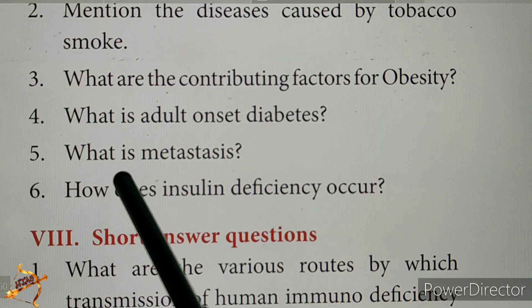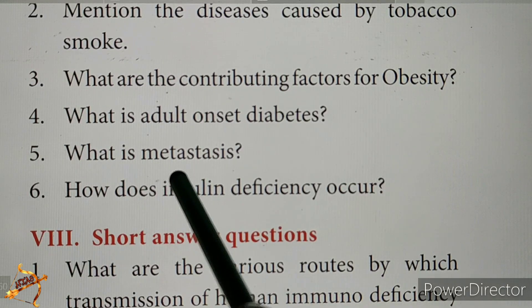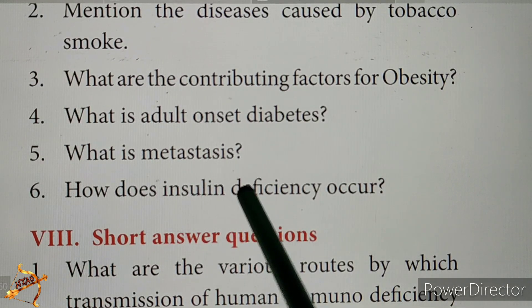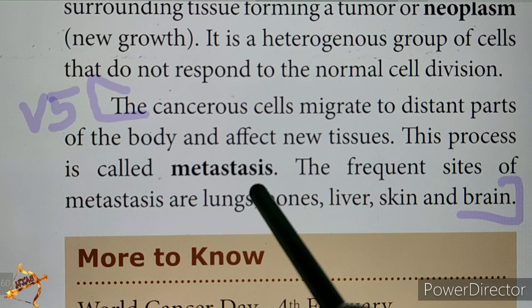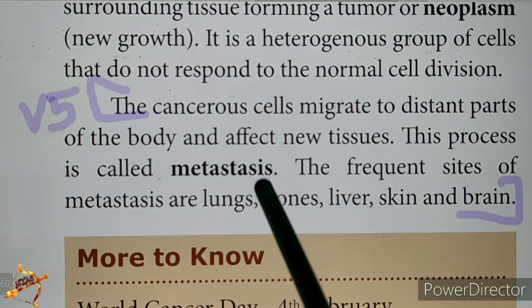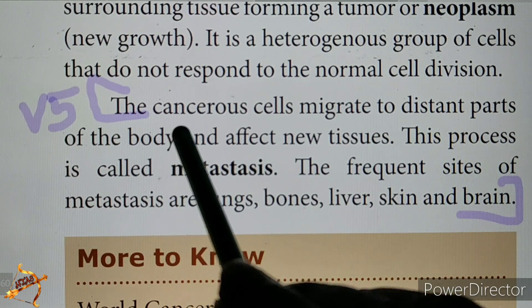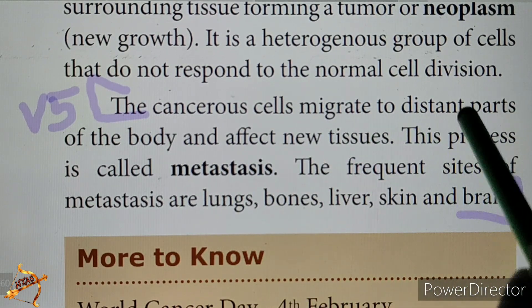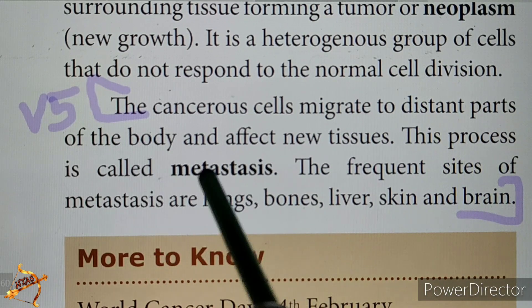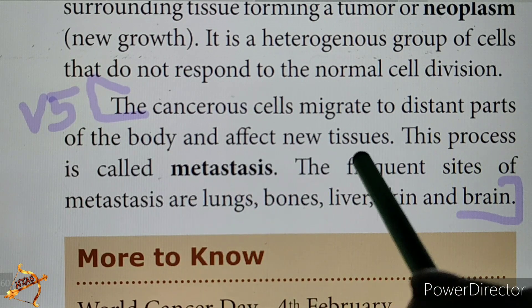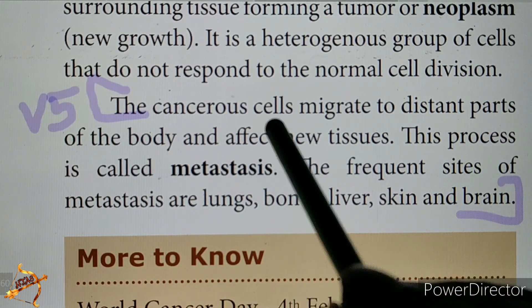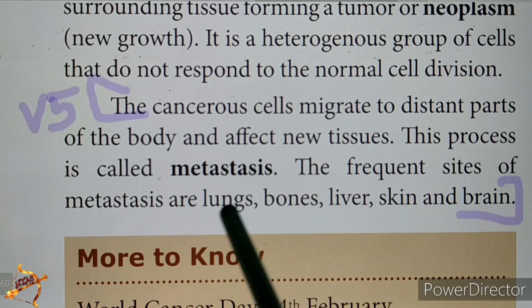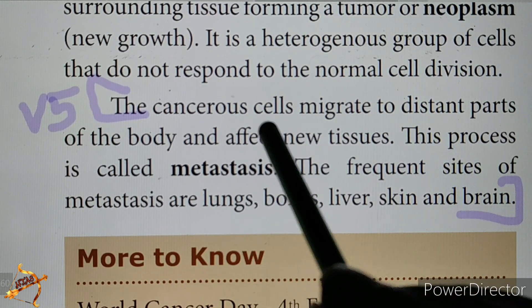Fifth question: What is Metastasis? Page 309 — the cancerous cells migrate to distant parts of the body and affect new tissues. Cancer is related to Metastasis.